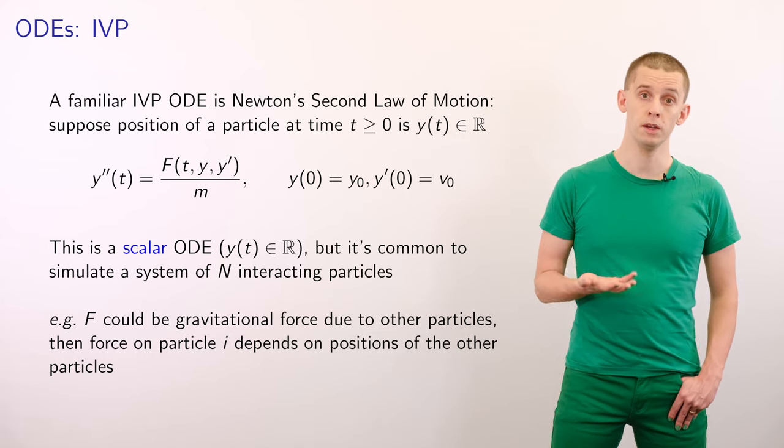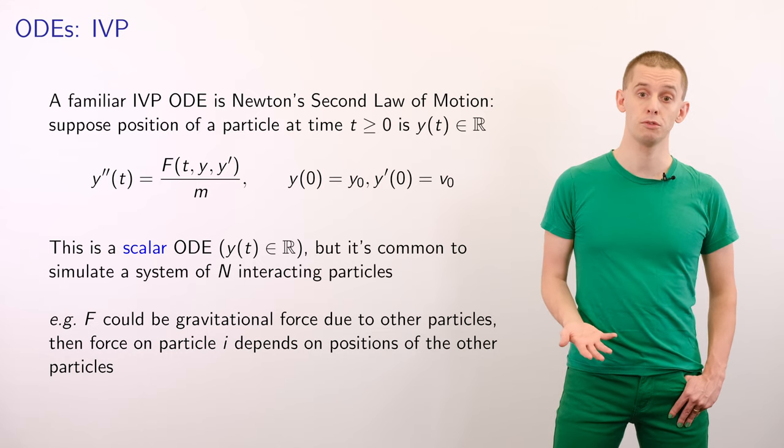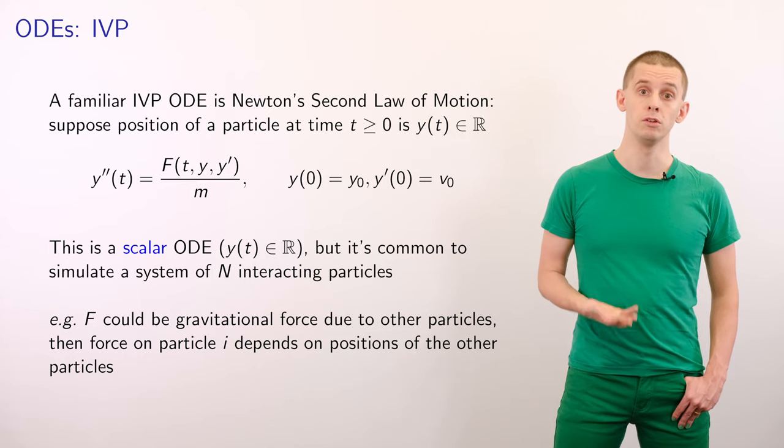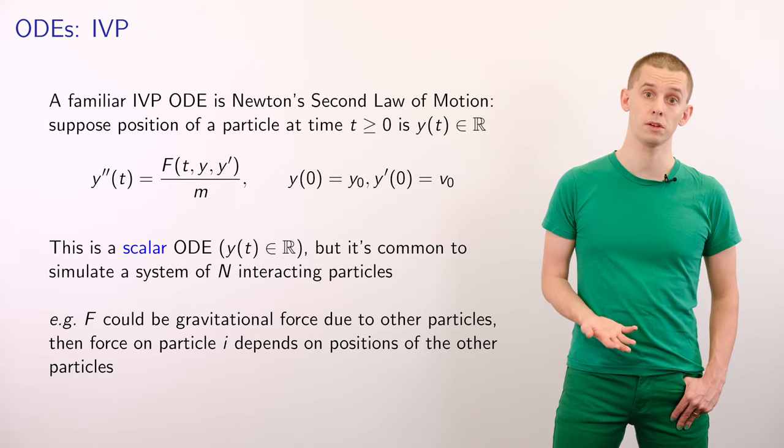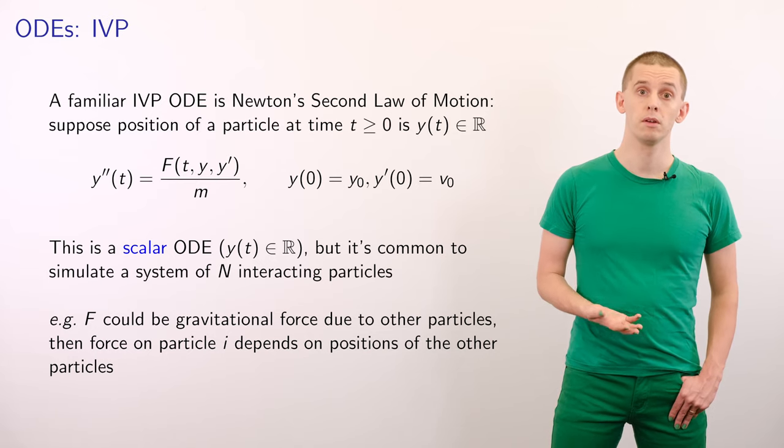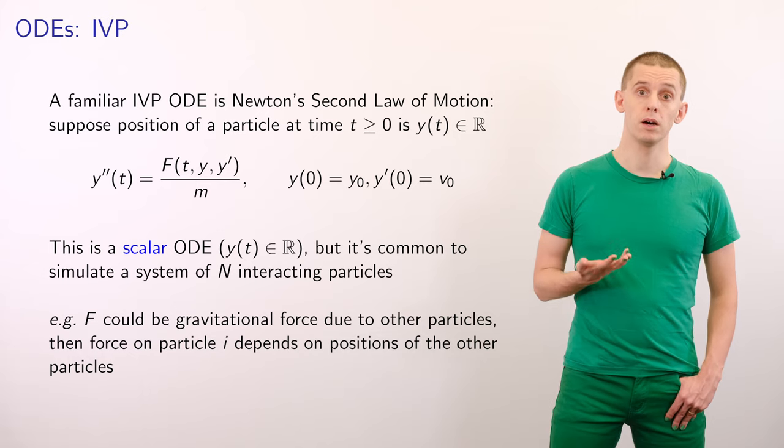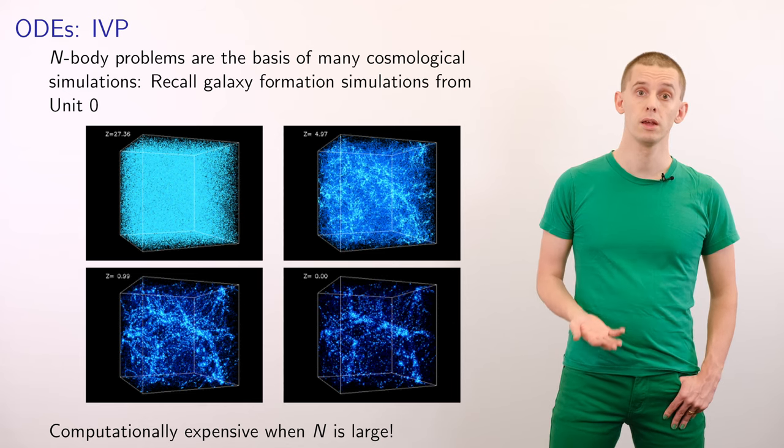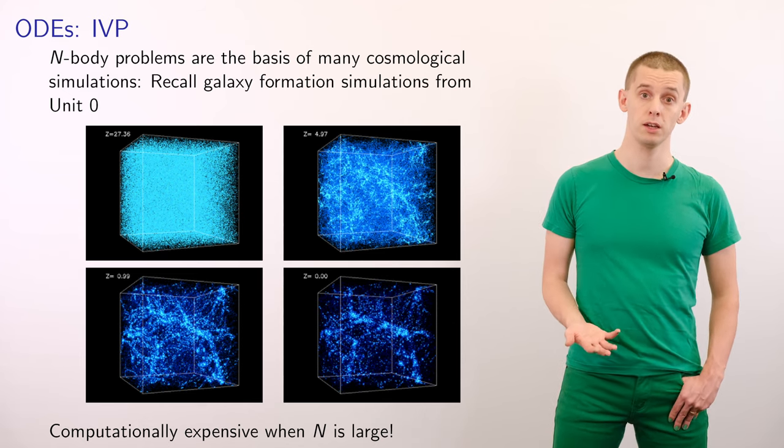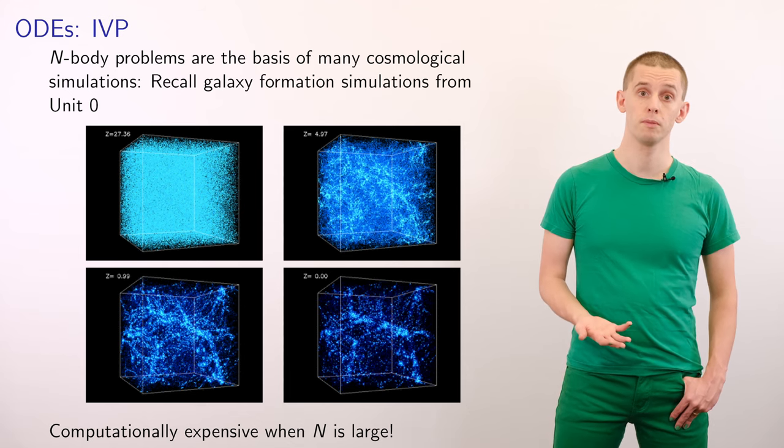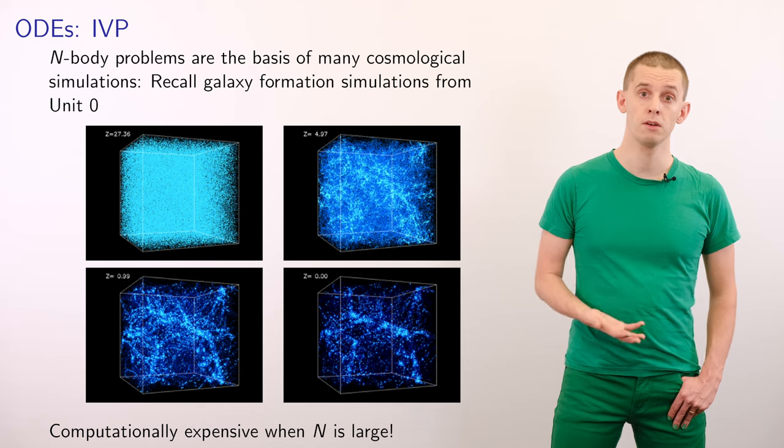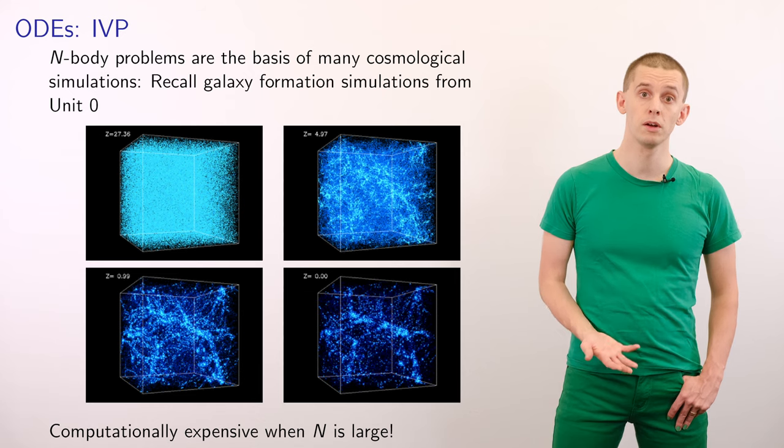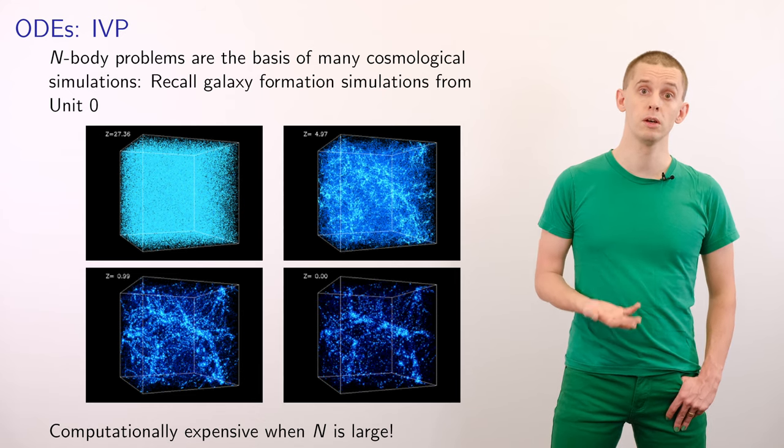But it's common to simulate problems like this for systems of n interacting particles. For example, the f here could represent the gravitational force due to other particles. The force on particle i could depend on the positions of all of the other particles. These n-body problems are often used in many situations. We saw one example of this in Unit 0, where we were looking at cosmological simulations for galaxy formation. Here we would be interested in a very large number of interacting particles, and therefore efficient numerical methods to solve the resultant differential equations would be very important.